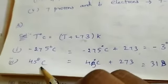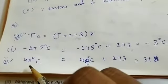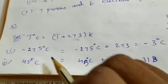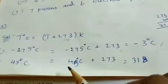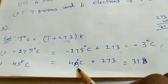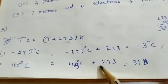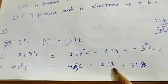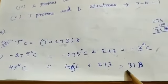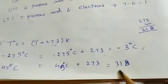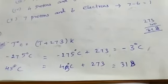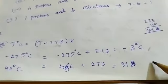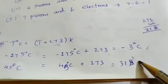Second: 45 degrees Celsius. Temperature in Kelvin equals 45 degrees Celsius plus 273, that's equal to 318 Kelvin.